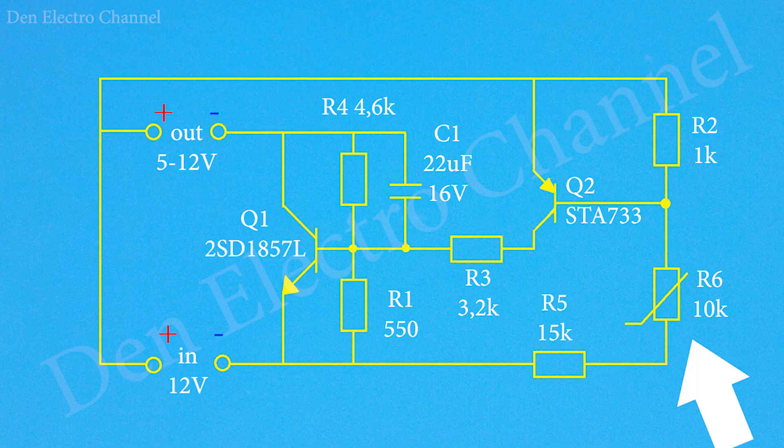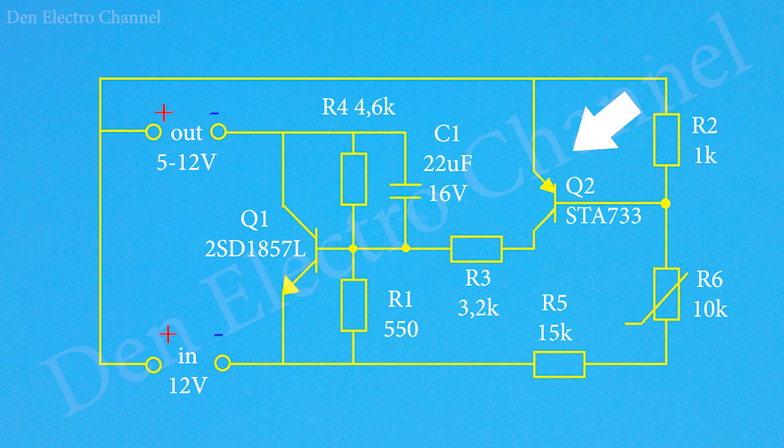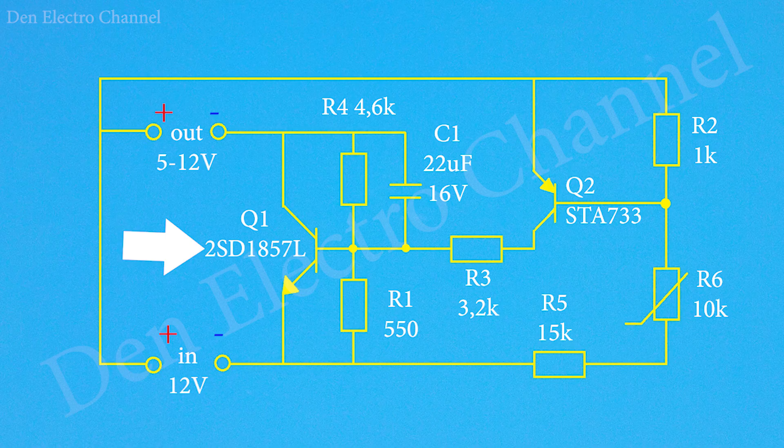When the temperature sensor cools down, it will close transistor Q2 which in turn will close the base of transistor Q1 to the plus. As a result, transistor Q1 will partially close and will be in the same state as it was at the beginning.